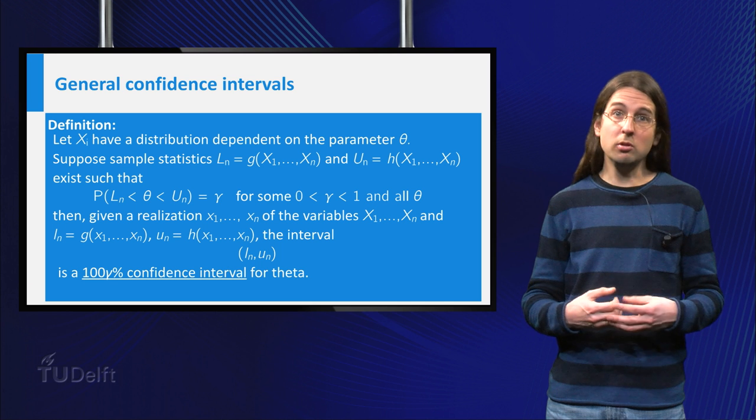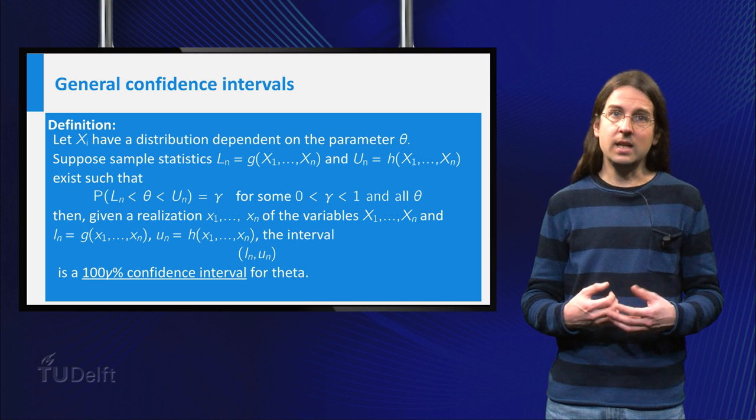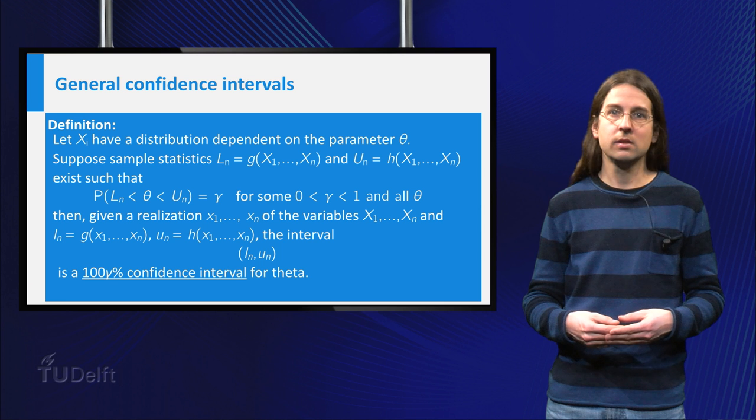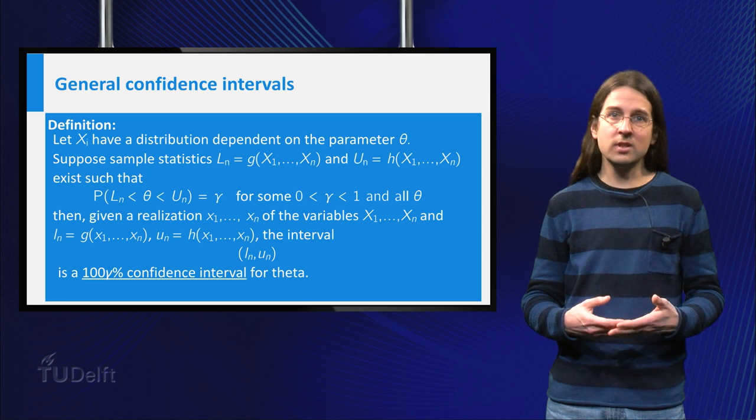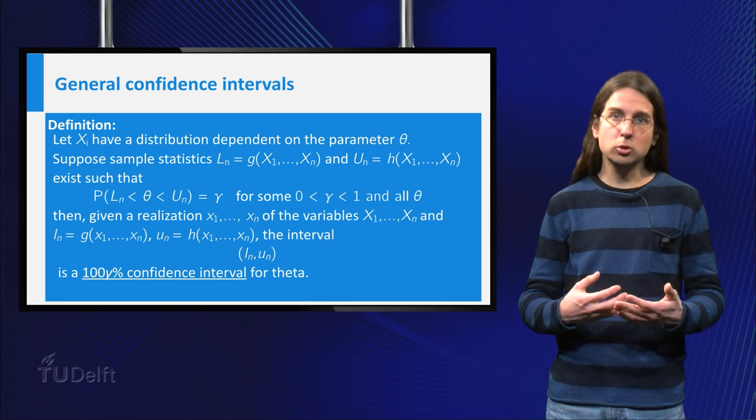In the example of the election polls, the theta is the percentage of people voting for one party. In the example of the scale, the theta is your true weight mu.